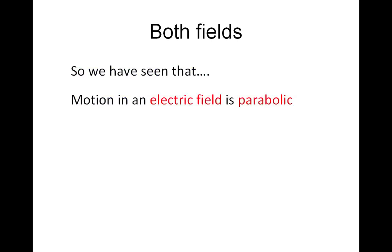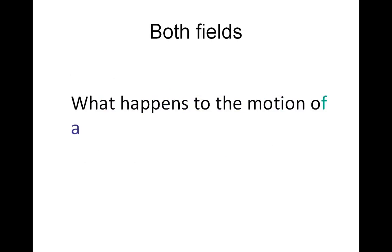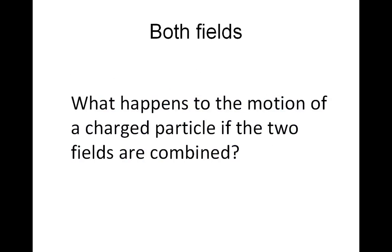So, electric field gives parabolic motion. Magnetic field gives circular motion. What's going to happen to the motion of the particle if the two fields are combined, if we have an electric field and a magnetic field?